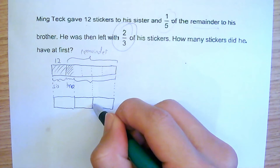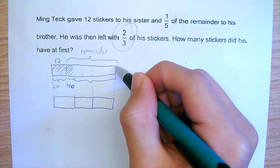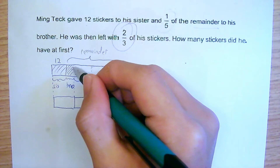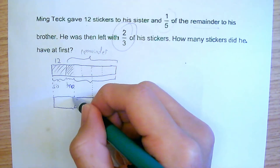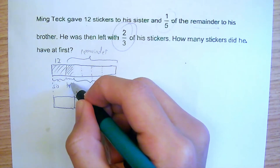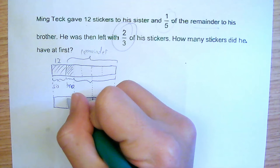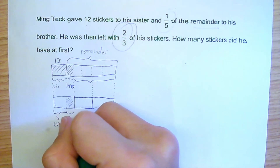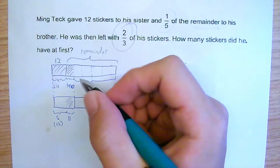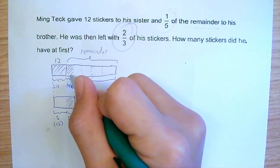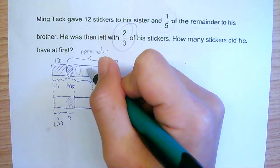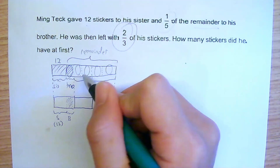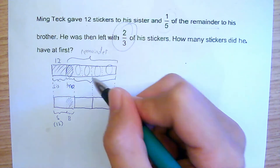Do you realize that this portion is the same as this portion, and this portion is the same as this entire portion? Which means that one long bar consists of the sister's 12 stickers and one-fifth of the remainder for the brother. The brother's one-fifth is the same as each of the other one-fifth units — they are all the same, because it's one-fifth of the remainder, one-fifth, one-fifth, one-fifth.